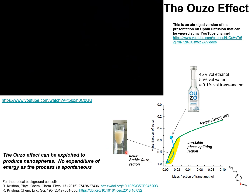We imply that this serpentine trajectory is a consequence of upheld diffusion. The Ouzo effect can be exploited to produce nanospheres, and this technique is highly efficient because no expenditure of energy is required and the process of entry into metastable regions is spontaneous.